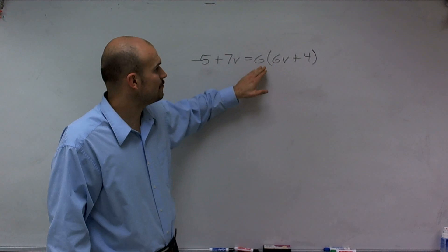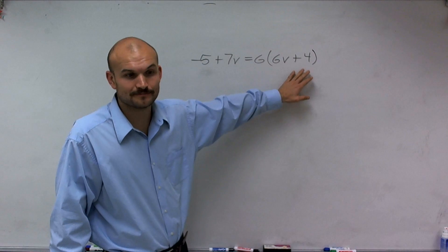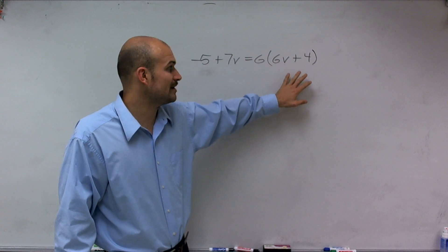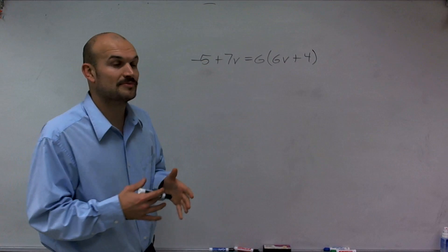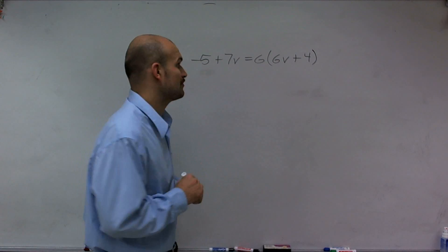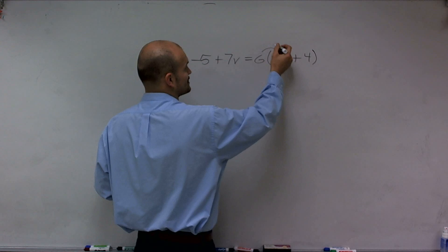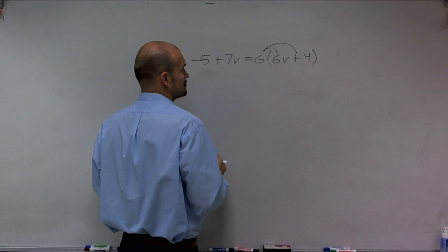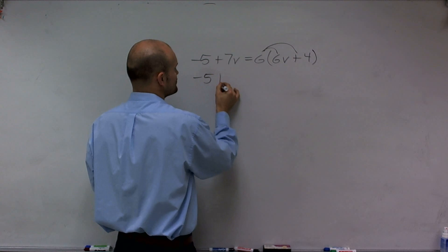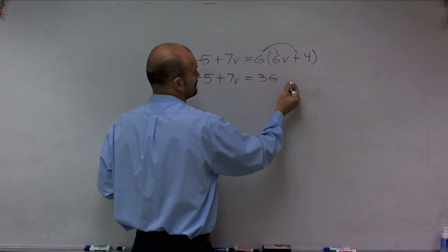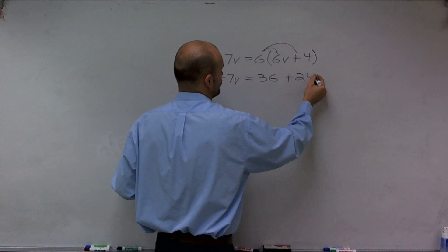However, on the right side, I have multiplication of six times a binomial in parentheses. So I'm going to apply the distributive property to get rid of my parentheses. I make sure I multiply the six times 6v, and the six also times the four. Therefore, on the left side, it's going to remain the same, and then I'll get 36v plus 24.